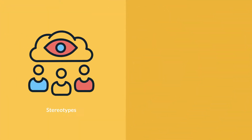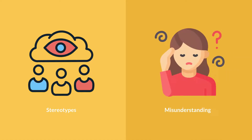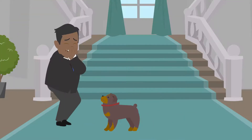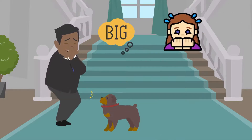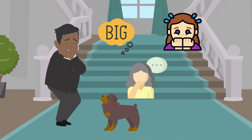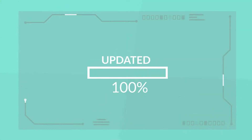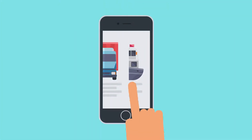But schemas can also lead to stereotypes or misunderstandings. For example, if you've only ever seen big, scary dogs, you might assume all dogs are like that, which is not true. So it's essential to update your schemas as you gather more information.